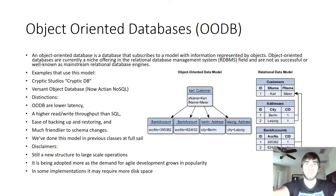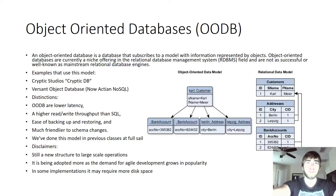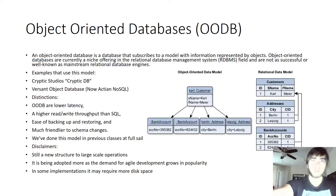Object-oriented databases may seem like a term you aren't used to. However, you've been creating object-oriented data models since you learned about inheritance back in PG1. Some examples are Cryptic Studio's CrypticDB and Action's NoSQL. ODBs have lower latency — meaning less lag — a higher read and write throughput than SQL, ease of backing up and restoring data, and are much friendlier to schema changes. Probably the most important distinction is that we've done this model in previous classes, so it may be easier to understand.